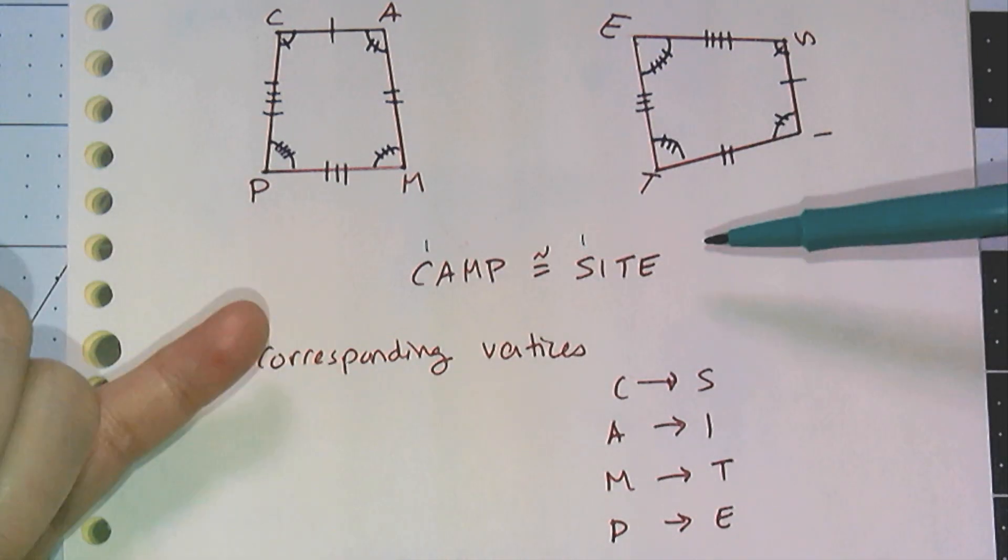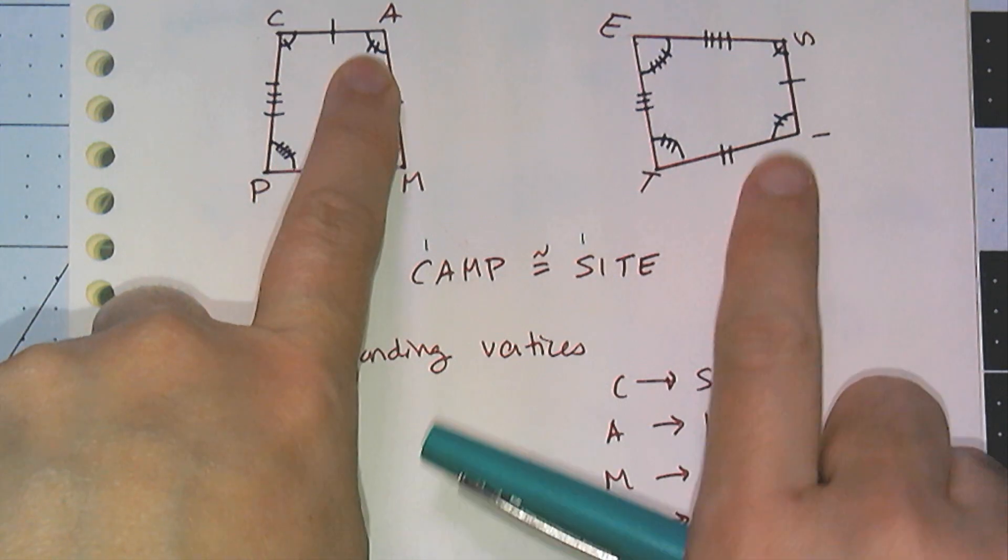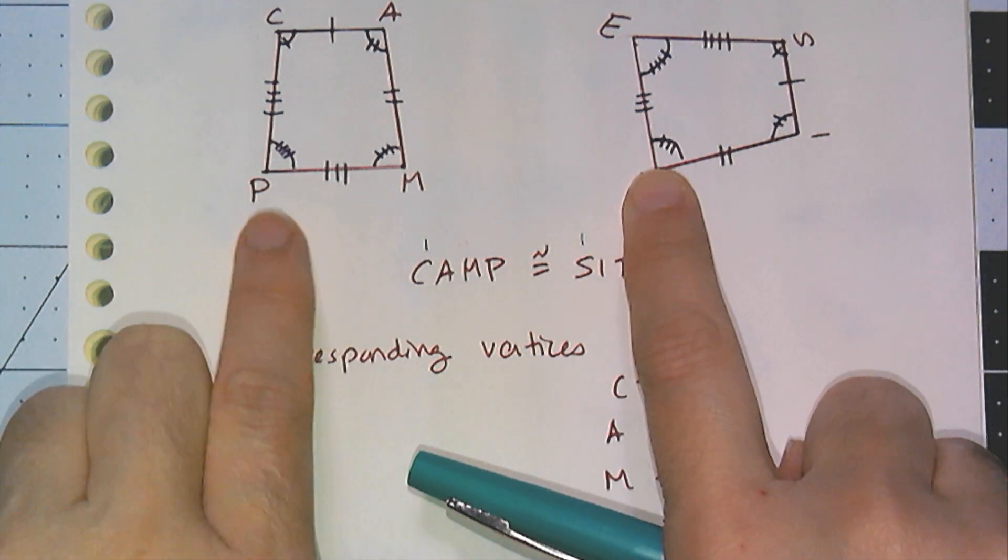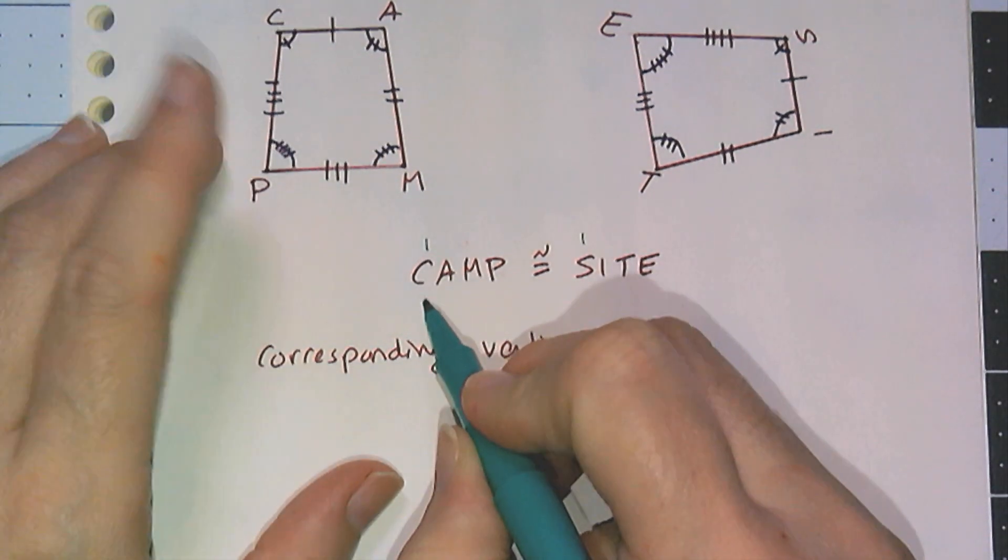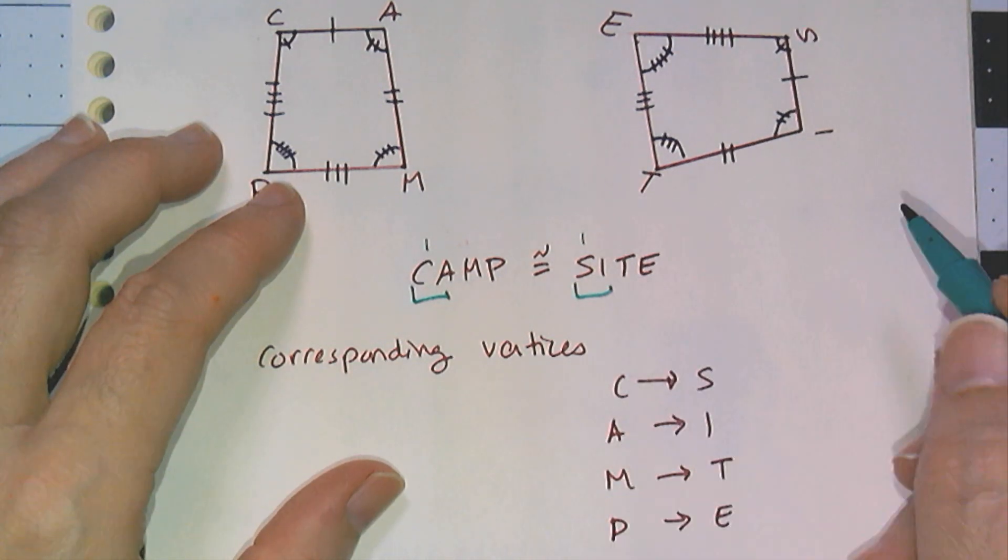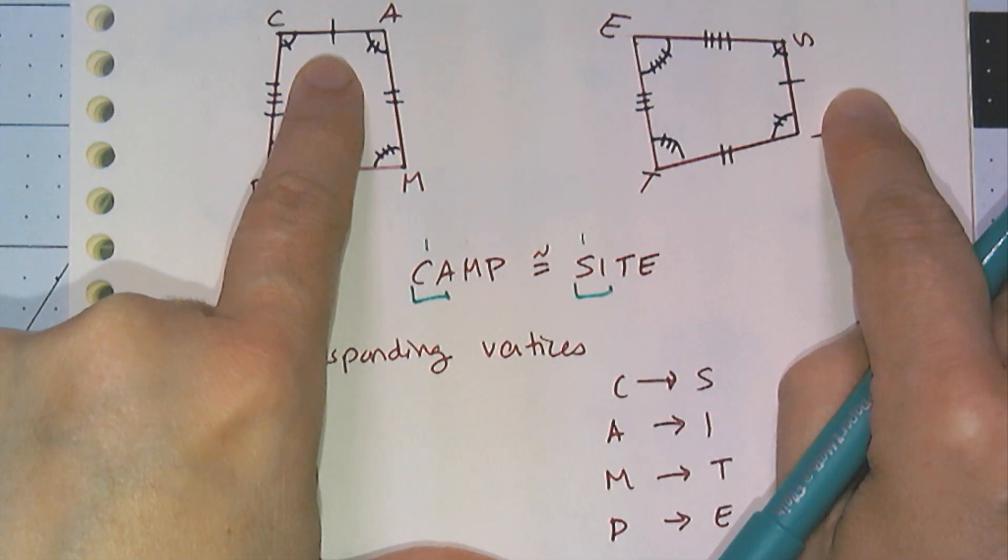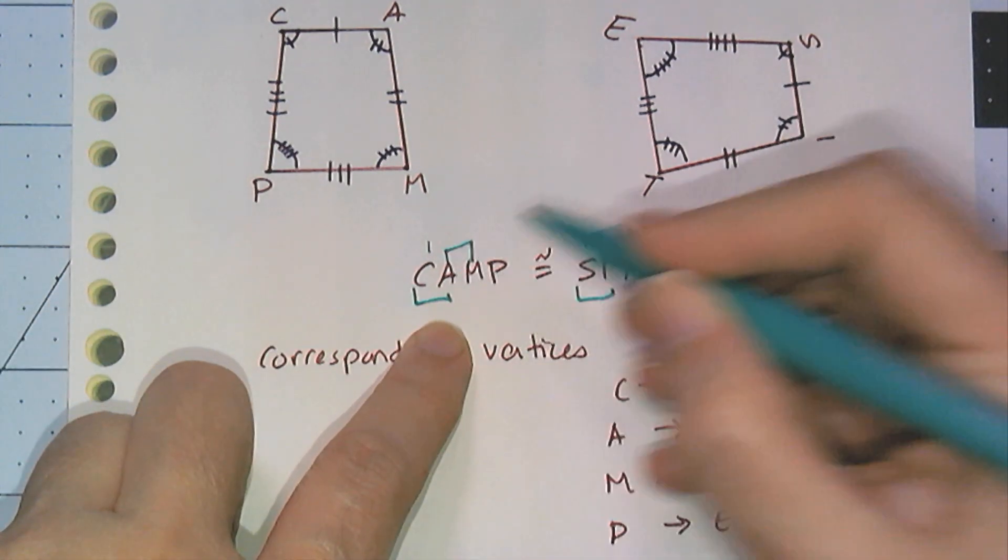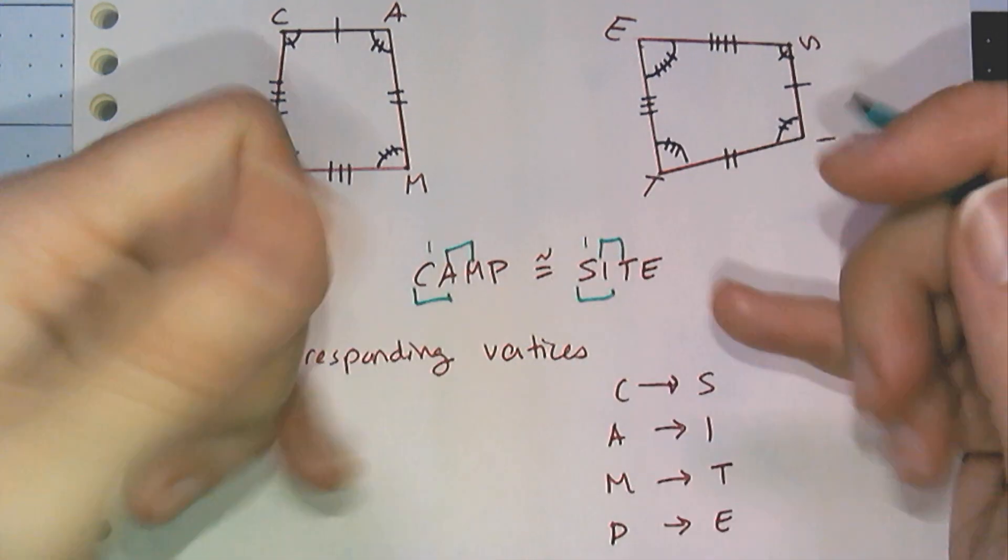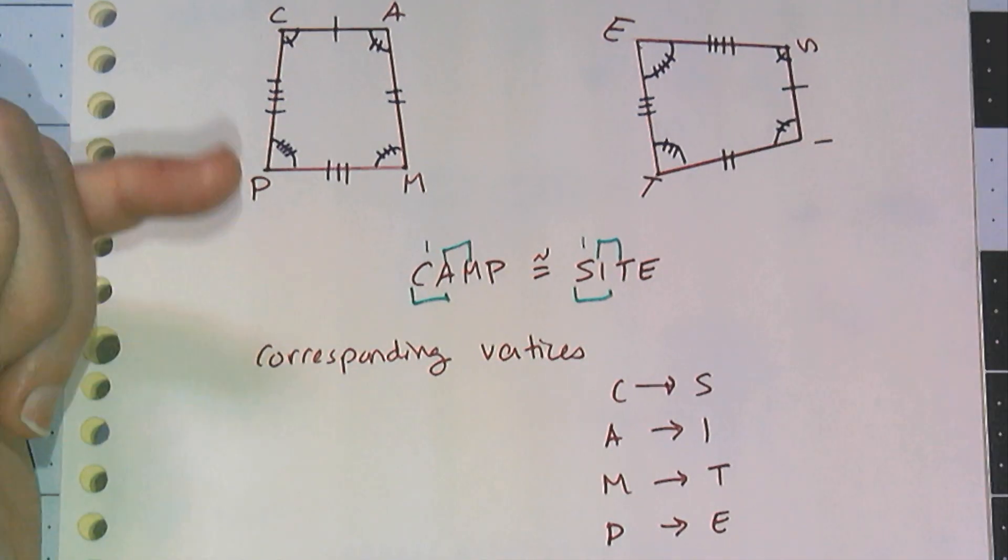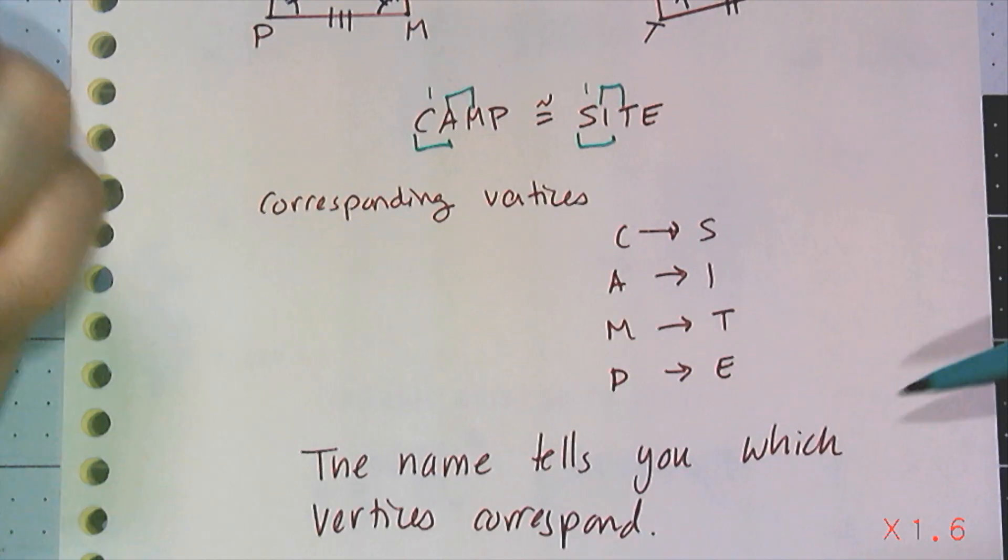So then when we draw this, and since I know they're congruent, I know the corresponding angles have to match. So angle C and angle S are congruent. Angle A and I are congruent. Angle M and T are congruent. And angle P and E are congruent. That also tells me which sides are congruent because, once again, the naming. CA forms a side and SI forms a side. This statement is telling me that CA is congruent to SI. I can go around with other pairs of letters. A and M have to match with I and T. Even though these shapes are oriented differently, I can just use the names to determine which side is congruent to which side, which angle is congruent to which angle, and which vertex corresponds to which vertex. The name tells you everything.